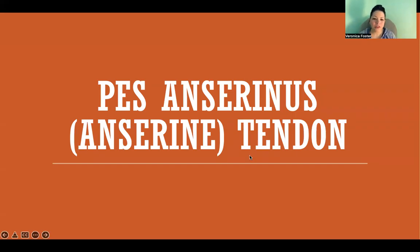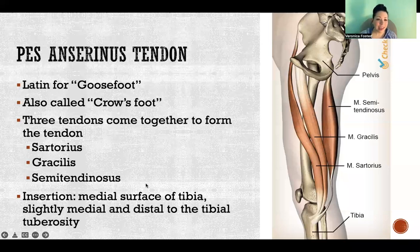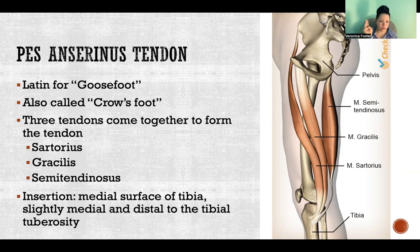Hello, in this video I'm going to talk about the pes anserinus tendon, also referred to as the pes anserine tendon. The name is actually Latin for goose foot, because of its kind of goose foot shape with the three toes. I've also heard it referred to as the crow's foot.